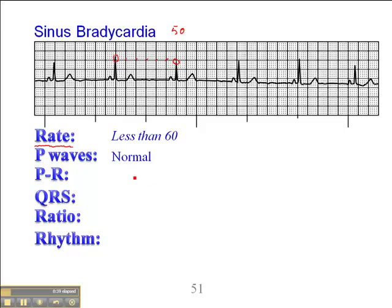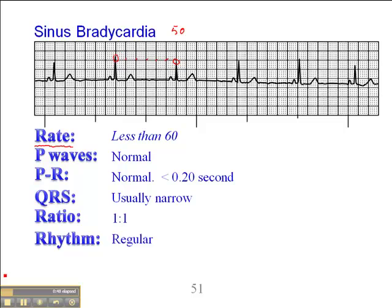The P waves are typically normal. PR interval is typically less than 0.20 second. QRS is usually narrow. The ratio in a sinus bradycardia is 1 to 1, and the rhythm is regular.